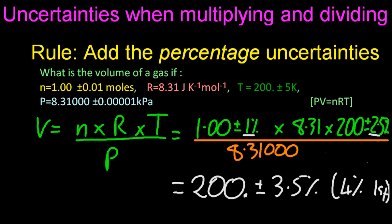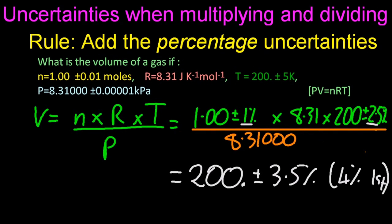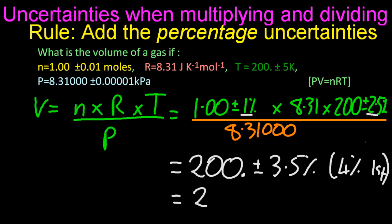Now I might ask you about the absolute uncertainty. So I need to now calculate what is 3.5% of 200. So 3.5% of 200, and that gives me 7. So plus or minus 7, and that should be litres.